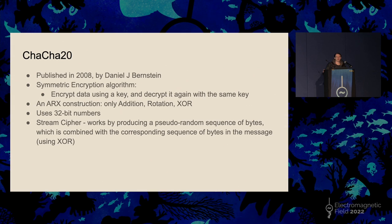ChaCha20 is an example of what's known as an ARX construction, which means it only uses three core operations: addition, rotation, and XOR. It's ultimately quite simple — only three things to worry about. It also uses 32-bit numbers, which work nicely in Scratch. And it's a stream cipher, which means it works by producing a pseudo-random sequence of bytes based on the key, which it then combines with the bytes from your message using XOR.